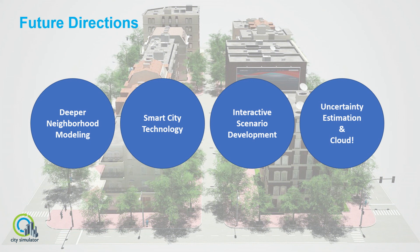What we want to do even more is go into deeper neighborhood modeling — down to the city block, getting Jane Jacobs with it, and measuring metrics like walkability and livability. We think we can model down at that level and produce really interesting answers. On smart city technology: right from the beginning when we conceptualized City Simulator, we thought about things like replacing all the cars in the city with autonomous vehicles — what would the impact be? You don't need parking spaces anymore because they can park elsewhere. There are big impacts that can happen and we'd like to explore that.